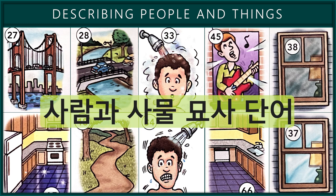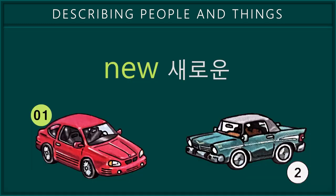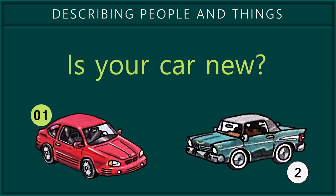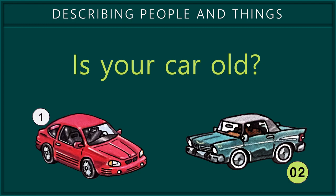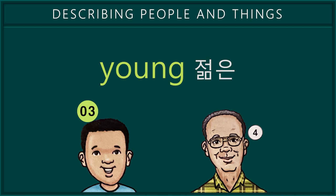Describing people and things. 1. New. 2. Old. 3. Young.